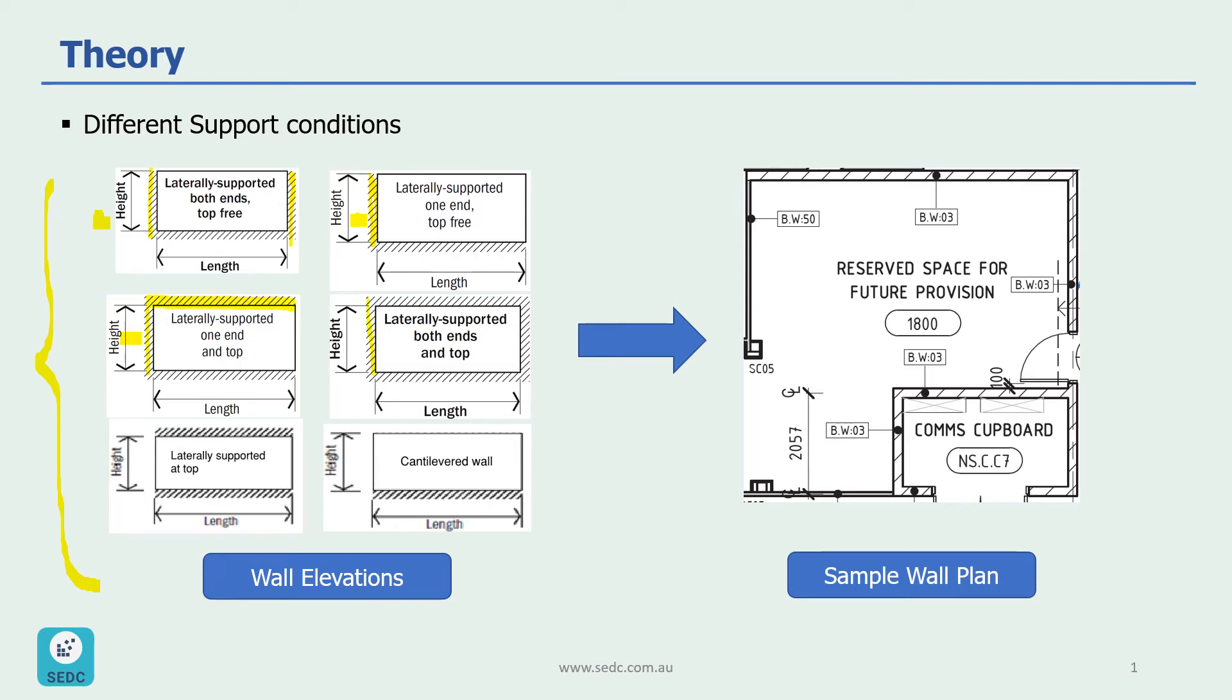In this case, it is supported at four sides, so two vertical edges and support at the top. In this case, we have only support at the top. And finally, in this case, we don't have any support at two vertical edges and at the top.